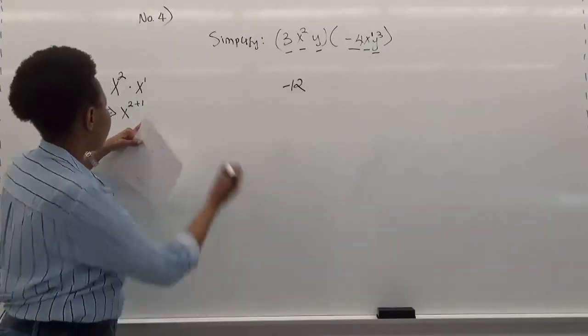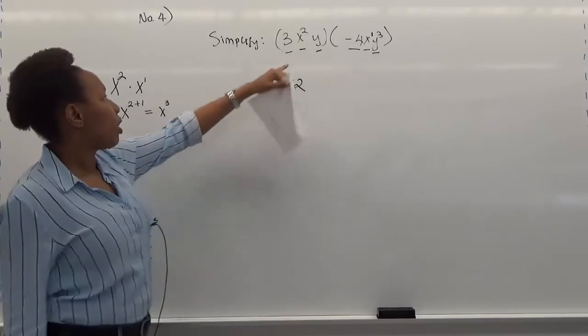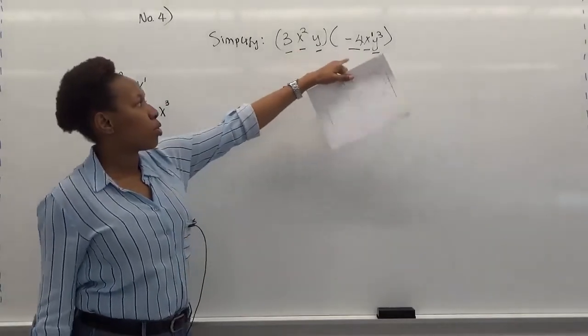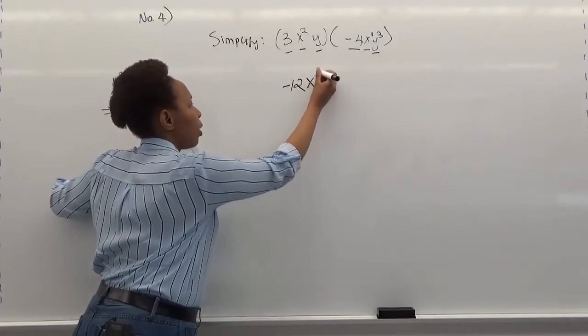So now that we have this, this becomes x to the 3. And then, that means that if we multiply x to the 2 to the x to the 1, we have x to the 3. So that's negative 12x to the 3 now.